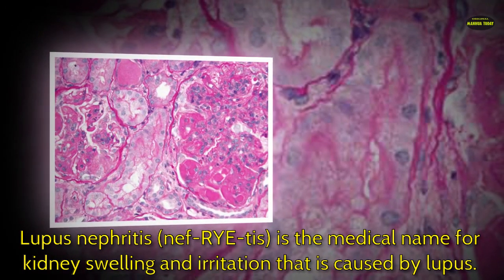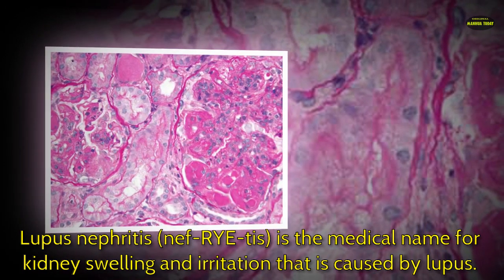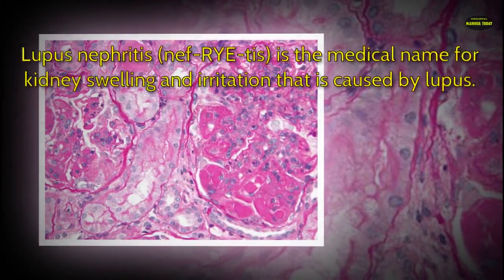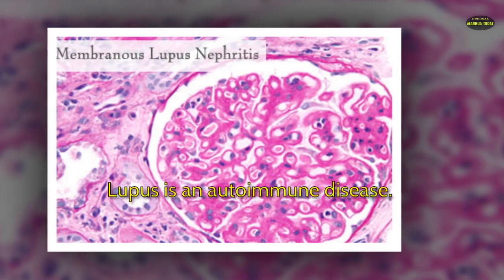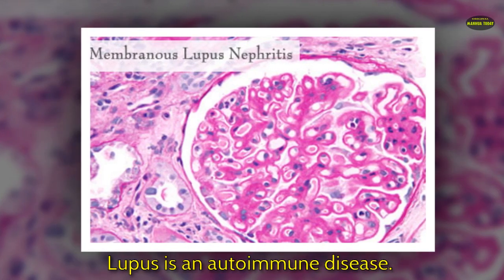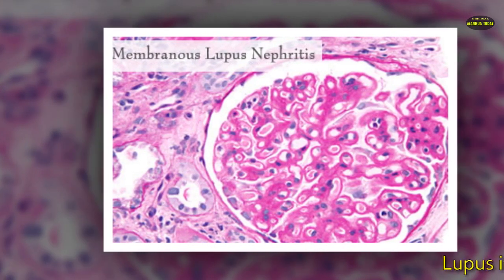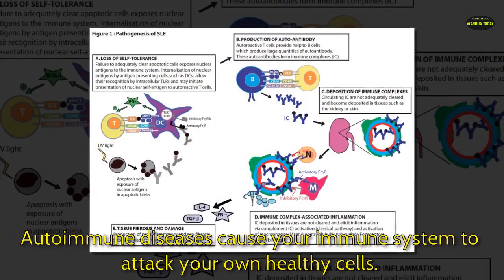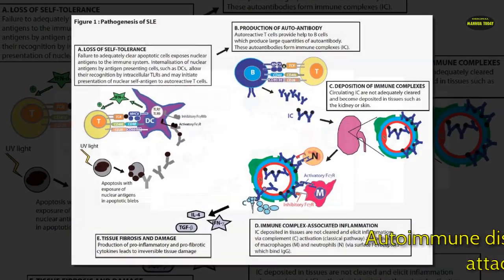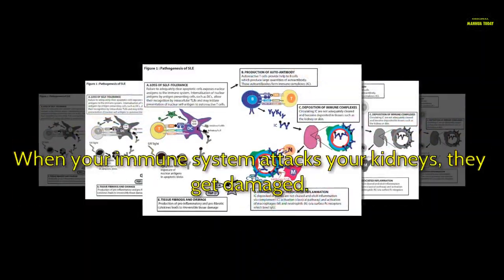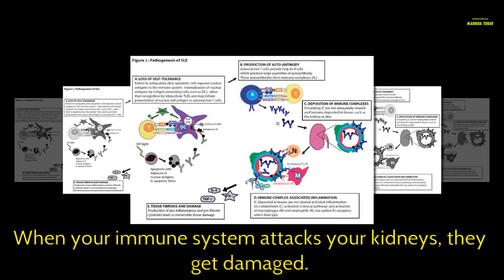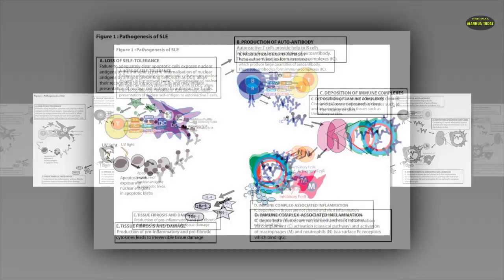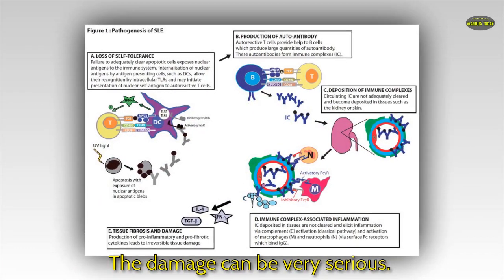Lupus nephritis is the medical name for kidney swelling and irritation that is caused by lupus. Lupus is an autoimmune disease. Autoimmune diseases cause your immune system to attack your own healthy cells. When your immune system attacks your kidneys, they get damaged, and the damage can be very serious.